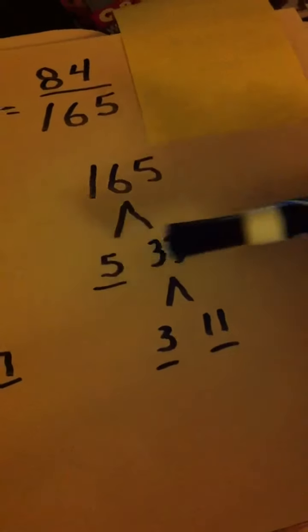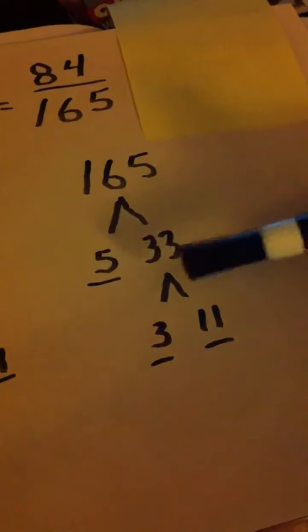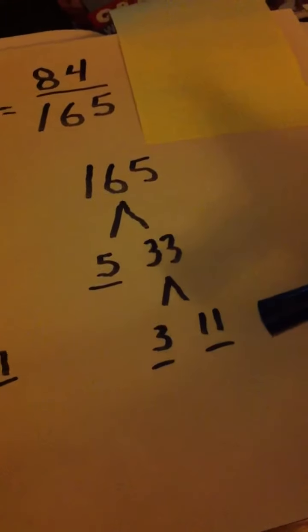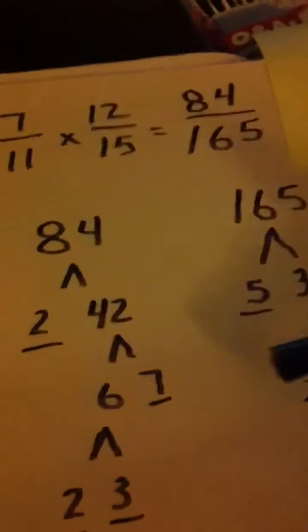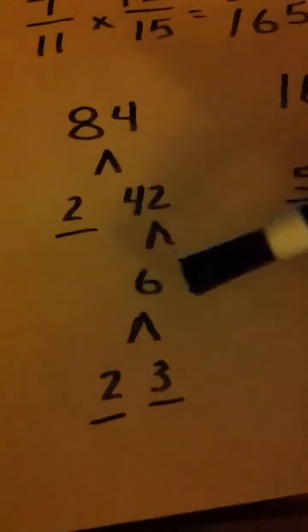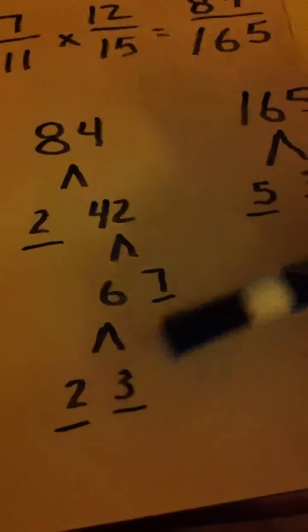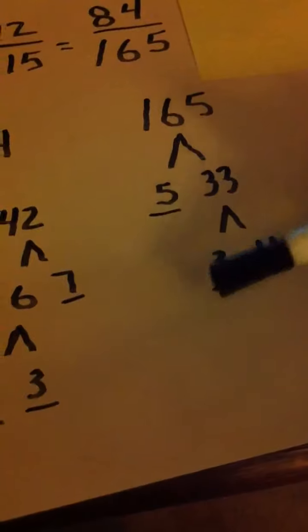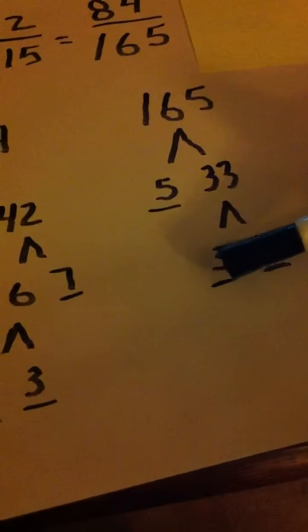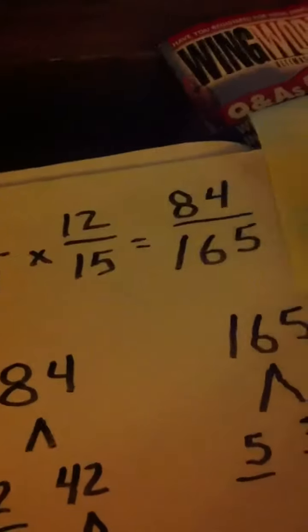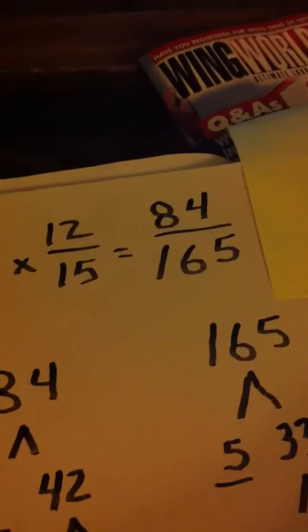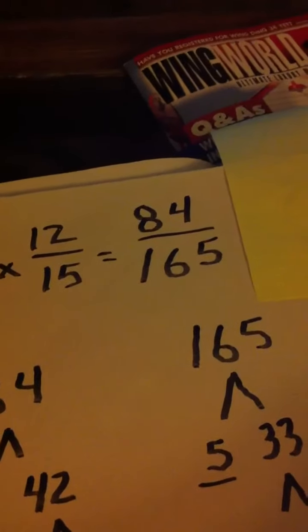Do the factor tree of 165. If you do 5 times 33, which breaks down into 3 times 11, well 3 is actually common. There's a 3 here and there's a 3 here. So guess what? Your 84 over 165 can be reduced.